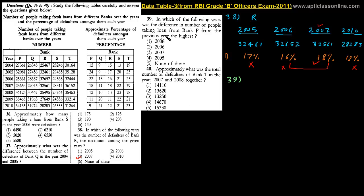For Bank P, the loan figures are: for 2008 it is 36125, for 2005 it is 32081, the previous year 2004 is 27361, then 25461, 32472, and 25138 for other years. We need to write the difference in number of people taking loans from Bank P year by year: for 2005, 2006, 2007, and 2008.